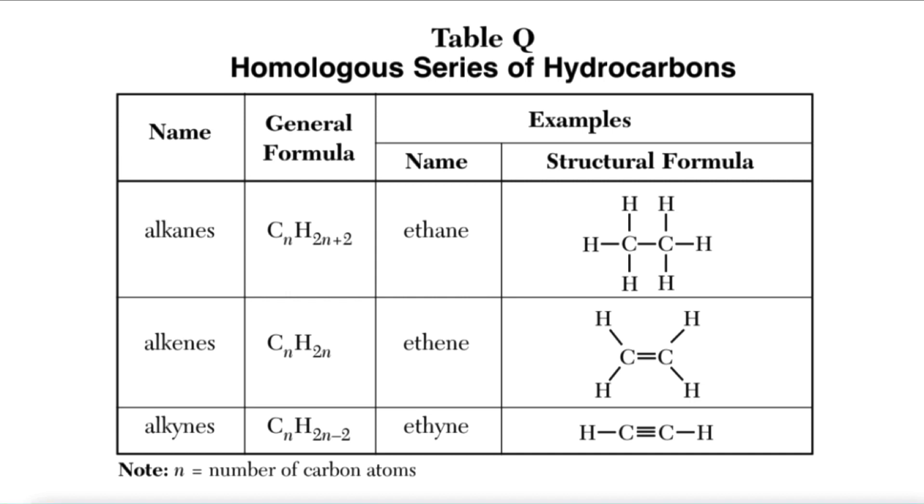N is telling us the number of carbon atoms. This general formula is telling you how to determine how many carbons and hydrogens there are in any alkane given only its name.